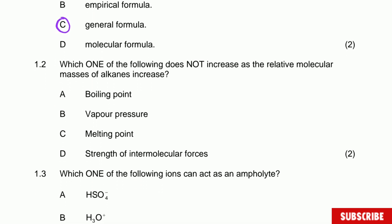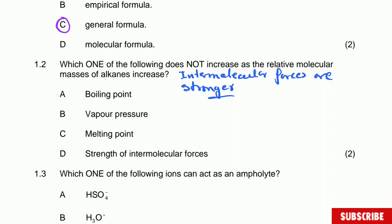Question 1.2: which of the following does not increase as the relative molecular mass of alkanes increases? As molecular mass increases, intermolecular forces become stronger. Therefore, boiling point increases, vapor pressure decreases — remember, if boiling point is high then vapor pressure is low — and melting point increases. So the answer is vapor pressure, which does not increase.